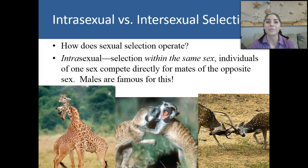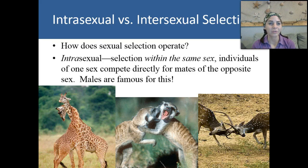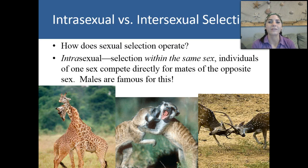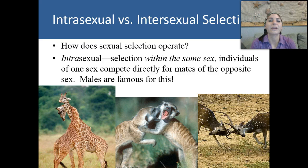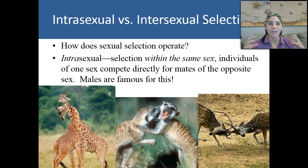There are two main types of sexual selection. We have intrasexual — intra with an A — and we have intersexual — inter with an E — sexual selection. Intrasexual selection is within the same sex, meaning individuals of one sex are competing directly with each other for mates of the opposite sex.